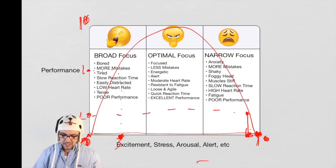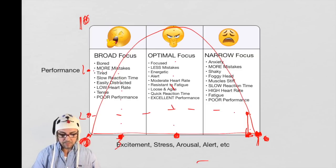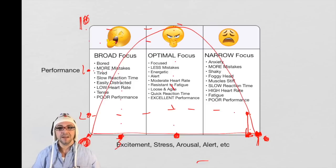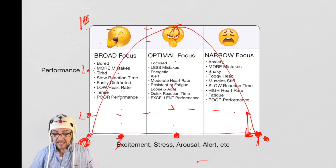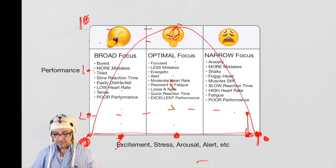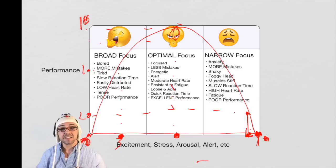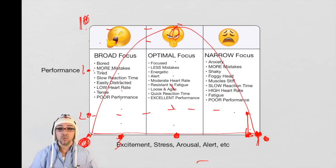Now let's look at an arousal of five — right in the middle. Following the curve up, we get around an eight or nine in performance. Optimal focus: that person is 100% focused, fewer mistakes are made, they're energetic and alert, moderate heart rate, resistant to fatigue, loose and agile, quick reaction time, and excellent performance.